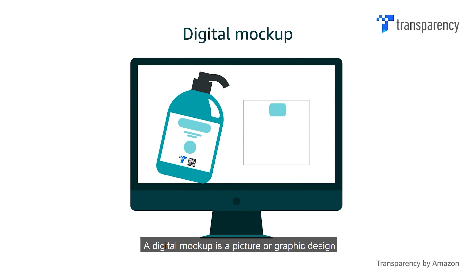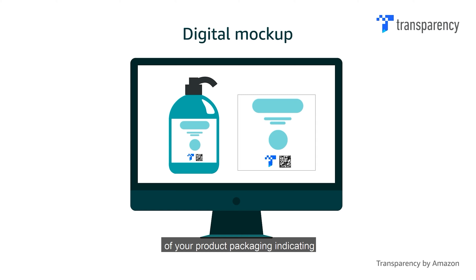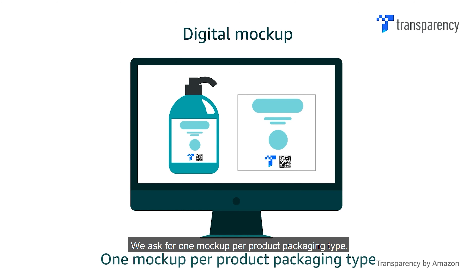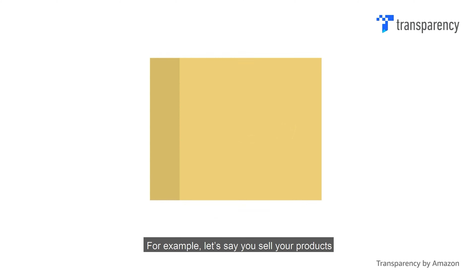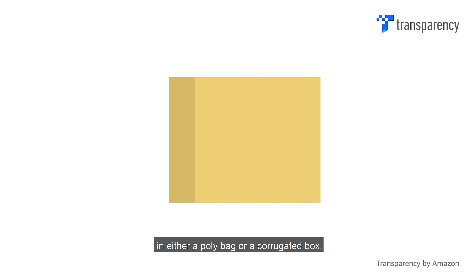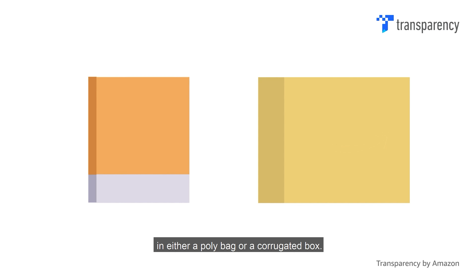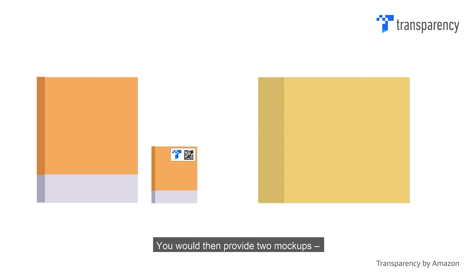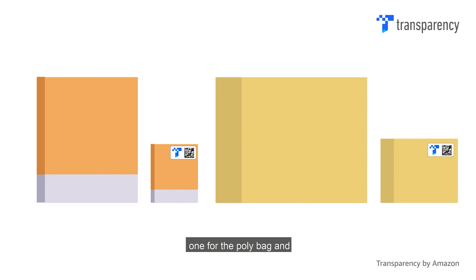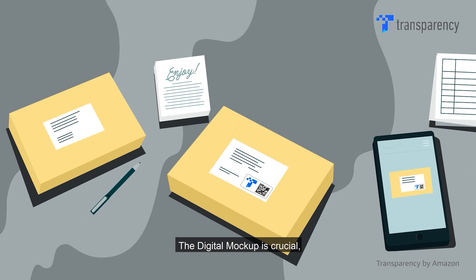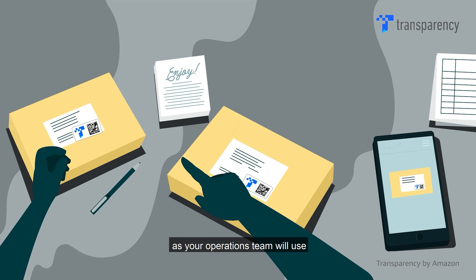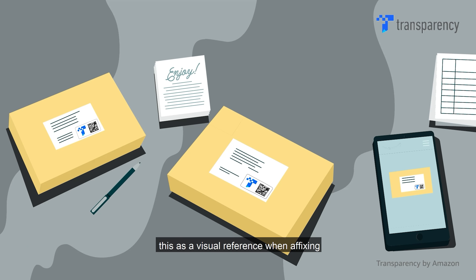You will also include a digital mock-up of the labelled unit. A digital mock-up is a picture or graphic design of your product packaging indicating where to place the Transparency label. We ask for one mock-up per product packaging type. For example, if you sell your products in either a polybag or a corrugated box, you would provide two mock-ups — one for the polybag and one for the corrugated box. The digital mock-up is crucial, as your operations team will use this as a visual reference when affixing the Transparency label to the product.